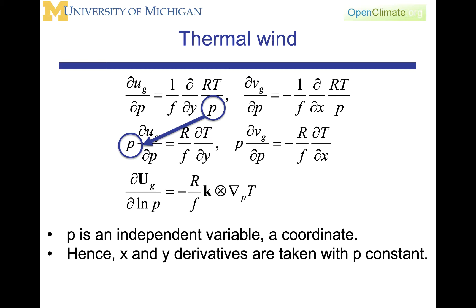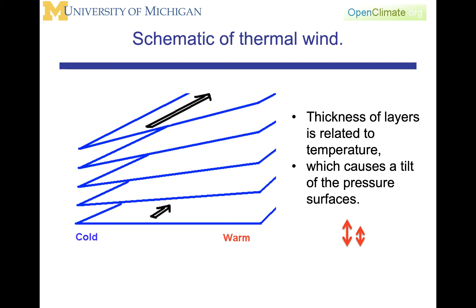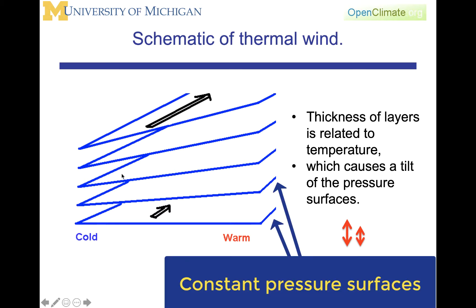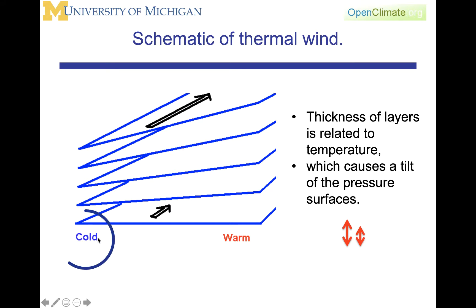The equations presented in this slide and the previous slide are the thermal wind equation. To get some intuitive feel of the thermal wind, what's drawn here are constant pressure surfaces. On this side over here on the left, it's colder. On this side over here on the right, it's warmer. The thickness of the layers, that is the distance between the pressure surfaces, are going to be related to temperature, and this will cause a tilt with height.